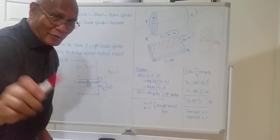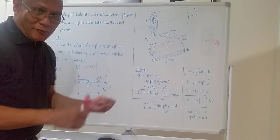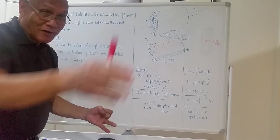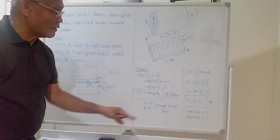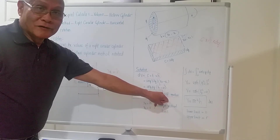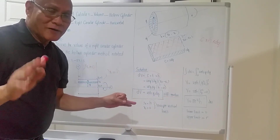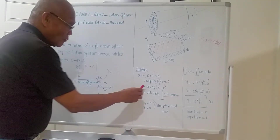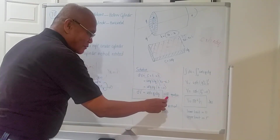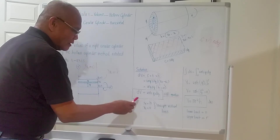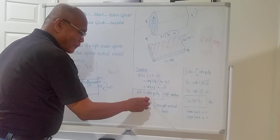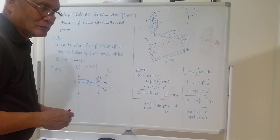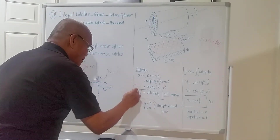That is actually our next topic: after differential calculus and integral calculus, the next main topic is differential equations. So at least you now have an idea of what a differential equation is. After multiplying everything out, what comes out is: dV = 2πhy · dy. To compute the volume, we integrate both sides.